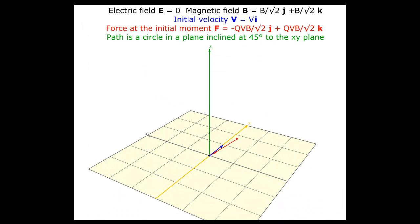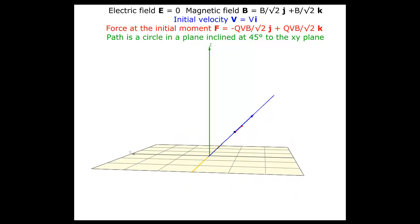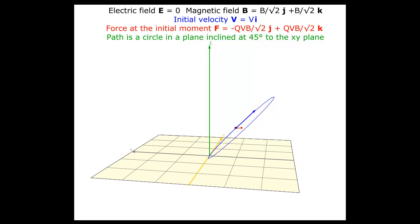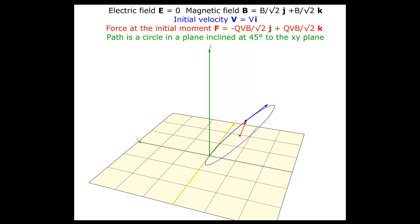The magnetic field now has x and z components. The initial velocity is still along the x-axis. The path is in a plane inclined to the x-y plane. When the velocity of the charged particle is perpendicular to the magnetic field, its path is a circle, and the plane of this circle is at right angles to the magnetic field.